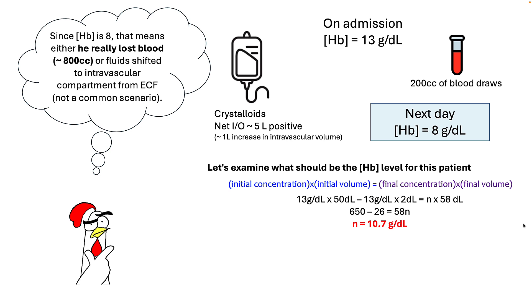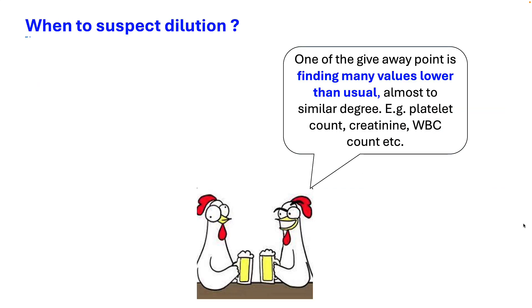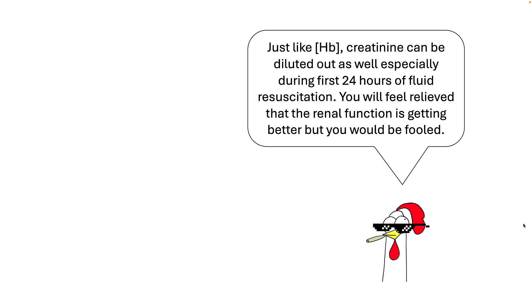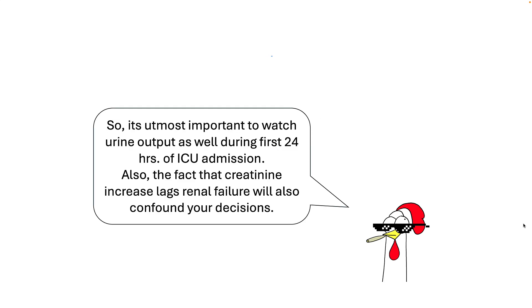Understanding these calculations will help you make more accurate clinical judgments. Interestingly, creatinine can also be diluted on the first day of resuscitation, resulting in false confidence that renal function is improving. We also know that creatinine lags behind worsening renal function. The combination of dilution and delay in the rise of creatinine can delay nephrology consultation and result in poor drug dosing. To avoid this error, monitor urine output along with creatinine, which is why I use RIFLE or AKIN criteria for identifying renal failure rather than looking at creatinine alone.